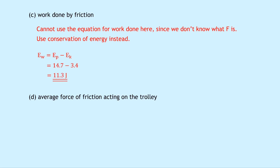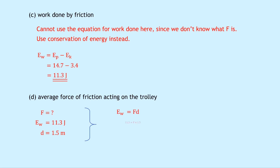Part D says to find the average force of friction acting on the trolley. We know the work done is 11.3 joules and the distance is 1.5 metres. Using the work done equation EW equals fd, substituting in gives 11.3 equals f times 1.5. Rearranging for f, we do 11.3 divided by 1.5, which gives 7.5 newtons.